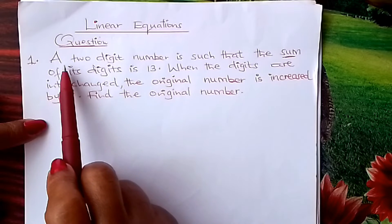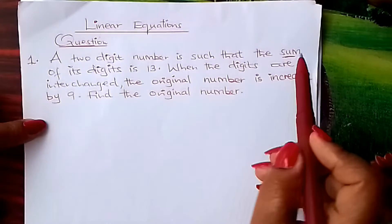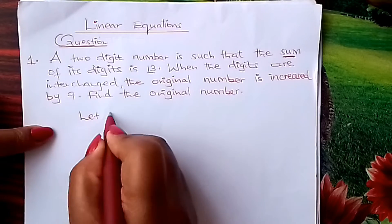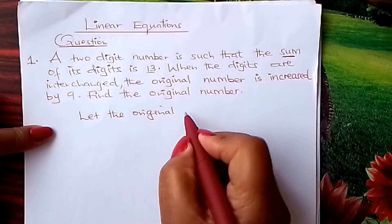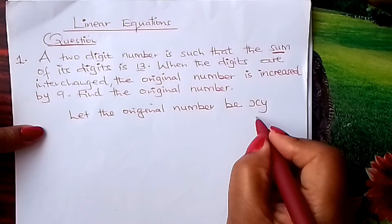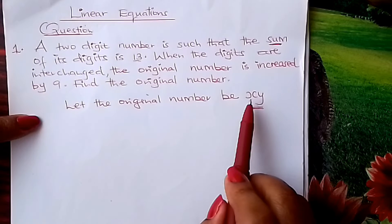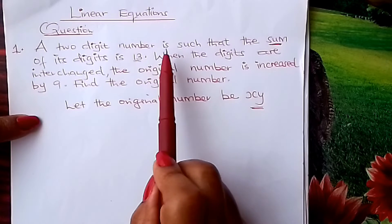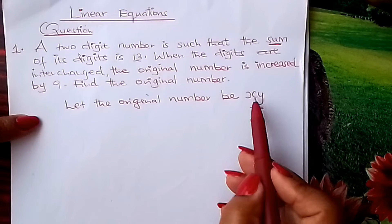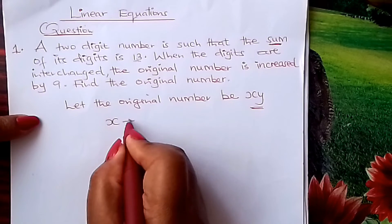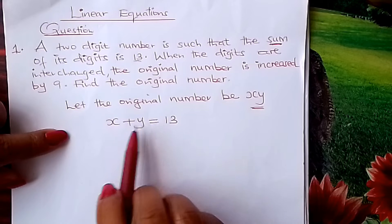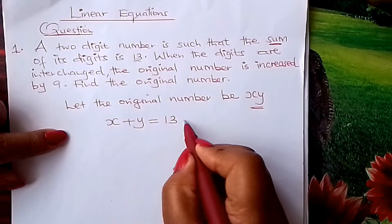So we go through the first sentence. A two-digit number is such that the sum of its digits is 13. So you start by saying, let the original number be XY. It is a two-digit number. We are told the sum of its digits is 13. The digits are X and Y, so if we add the two, this gives us 13. X plus Y gives us 13. Call this equation 1.